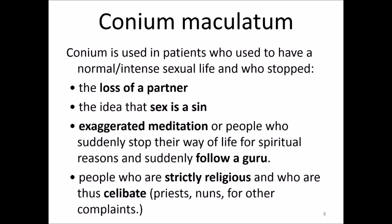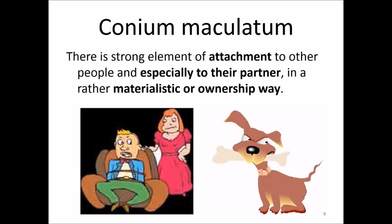Conium is a remedy we think of when a man or woman has lost a partner and has no ability to continue sexual relations, because they tend to be very fixed and wedded to that particular individual. They are not a promiscuous type — they simply need the regular gratification of sexual release, and now that their partner is no longer available, they have difficulty moving on to someone else. Without that gratification, many different types of health issues arise. We see in Conium a tremendous attachment to the partner — almost a kind of materialistic ownership.